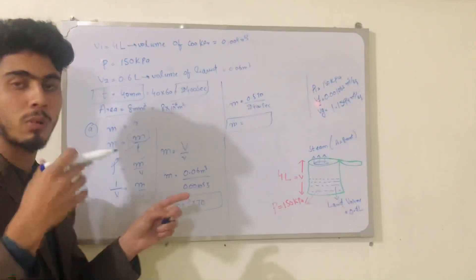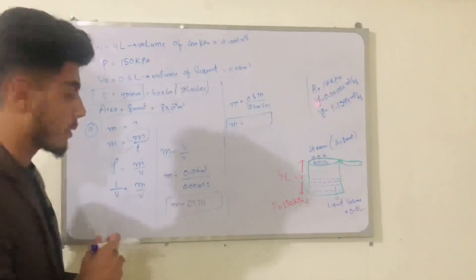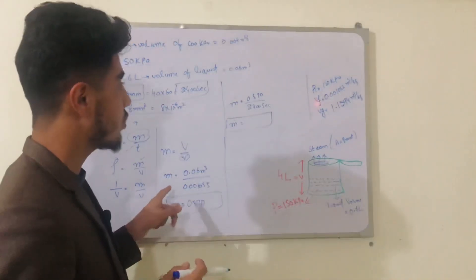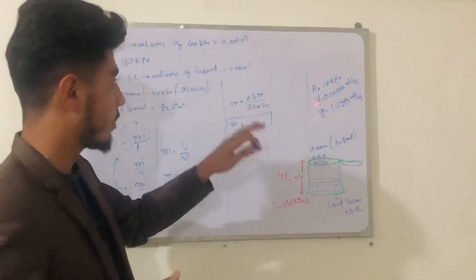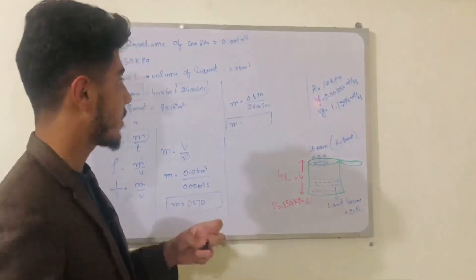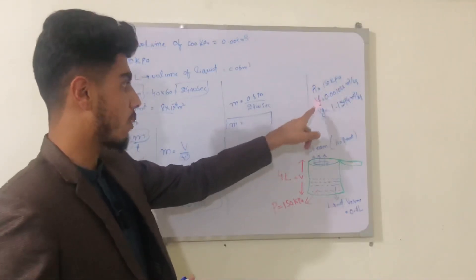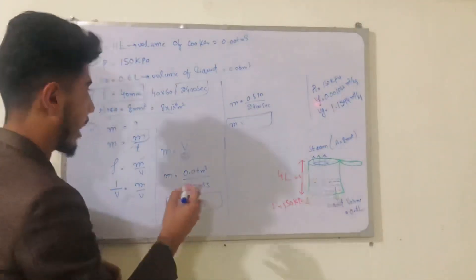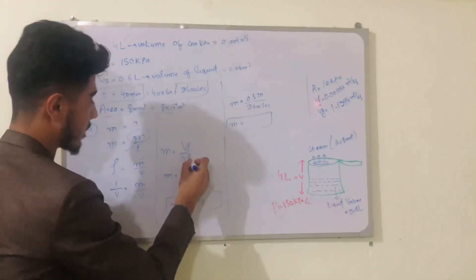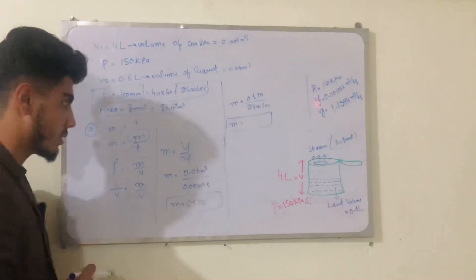The liquid in the form of steam is going out of the cooker, so we use the liquid volume. The specific volume value is obtained from Table A-4, the saturated water pressure table, at 150 kilopascal. From there we get the specific volume of the fluid (vf) and specific volume of the vapor (vg). We use vf here because we are dealing with the volume of liquid.